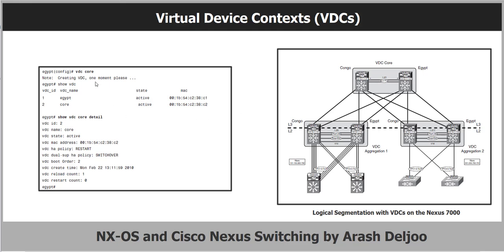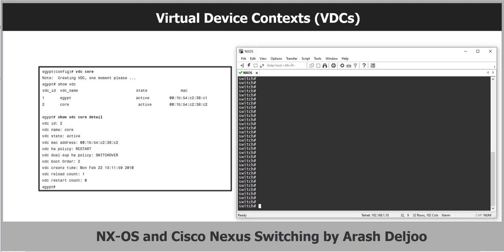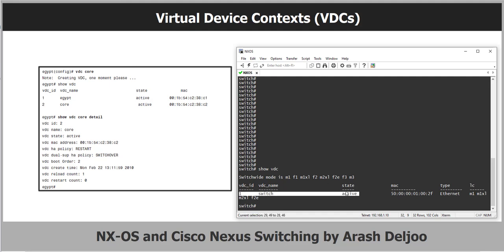As you can see, this example shows how to configure the VDC named 'core' on a switch called Egypt. We have Congo and Egypt switches, and to configure a VDC you use the 'vdc' command followed by the VDC name. Using 'show vdc' you can see the configured VDCs — here we have VDC one named Egypt and VDC two named Core. In our emulator, 'show vdc' shows one VDC, which is the default, with the name 'switch', status active, with its MAC address and VDC type.